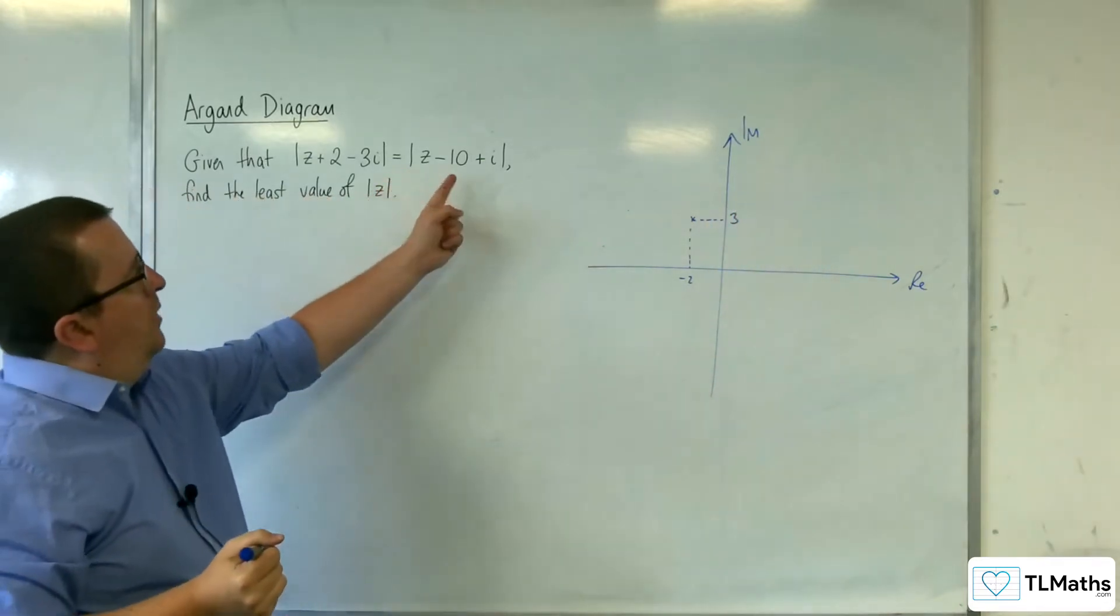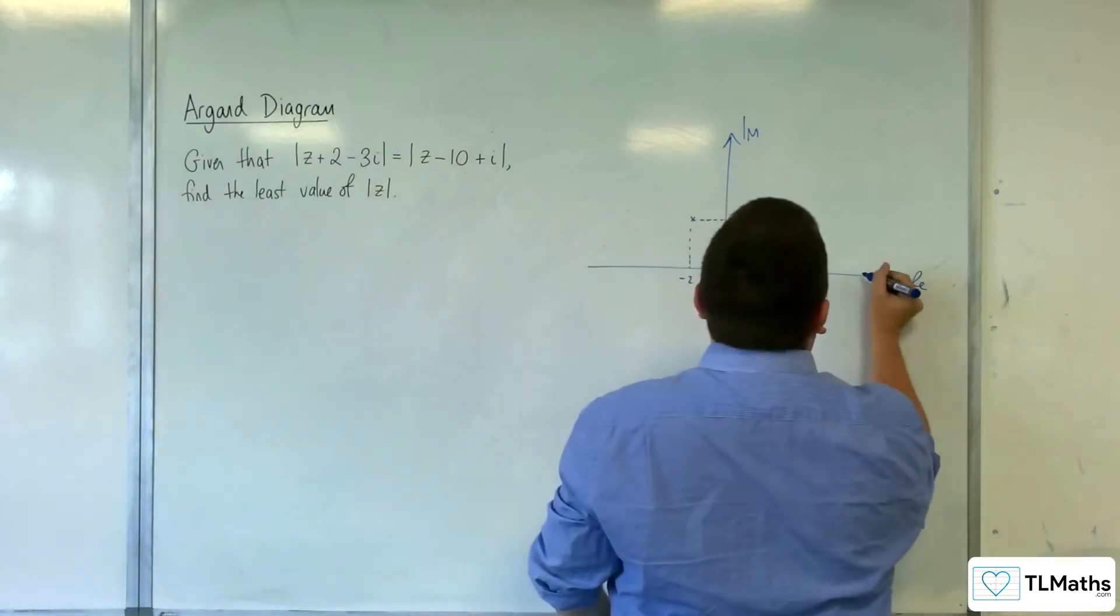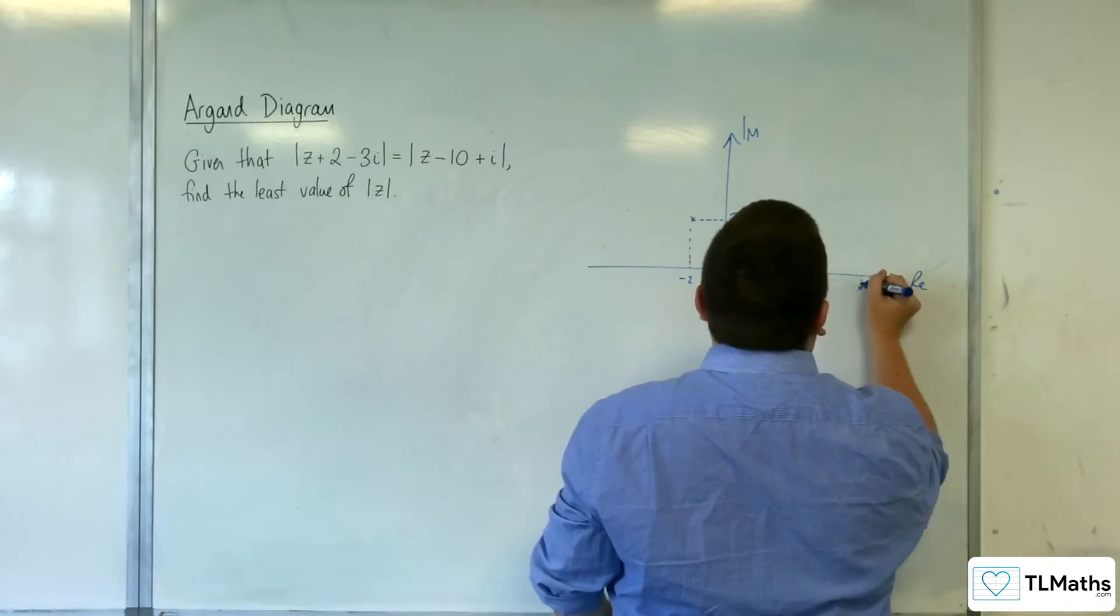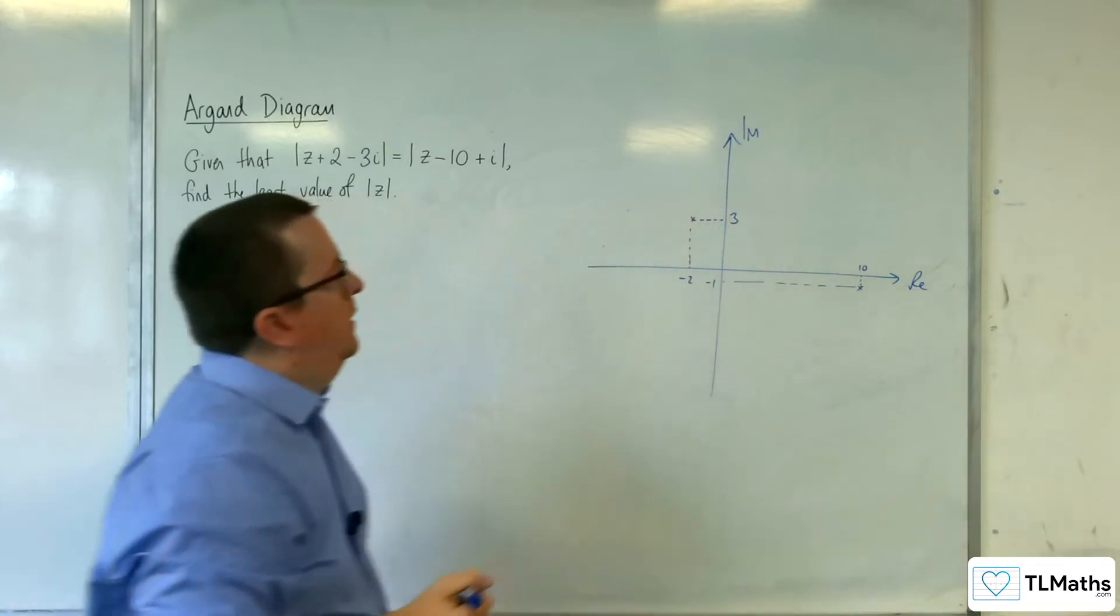And we've got plus 10 take away i. So plus 10 take away 1, something like this.